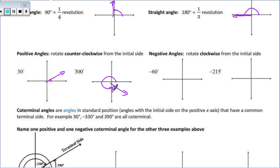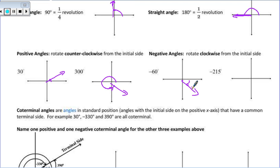Negative angles are going to rotate clockwise. We're going to start on the x-axis, but now we're just going to rotate in the other direction. If I talk about a negative 60-degree angle, we're going in that direction. You'll notice that these angles are exactly the same — if I go 360, I would have 60 degrees to go over here. A negative 60-degree angle rotates clockwise, but the terminal side is in the same position.